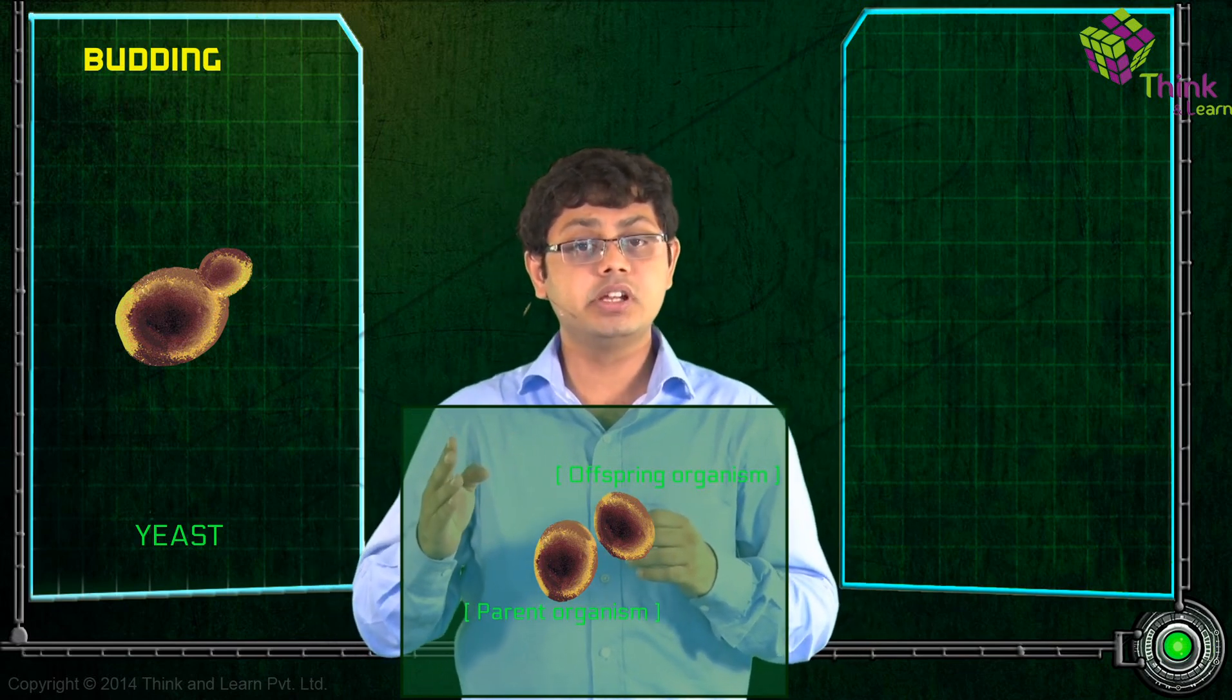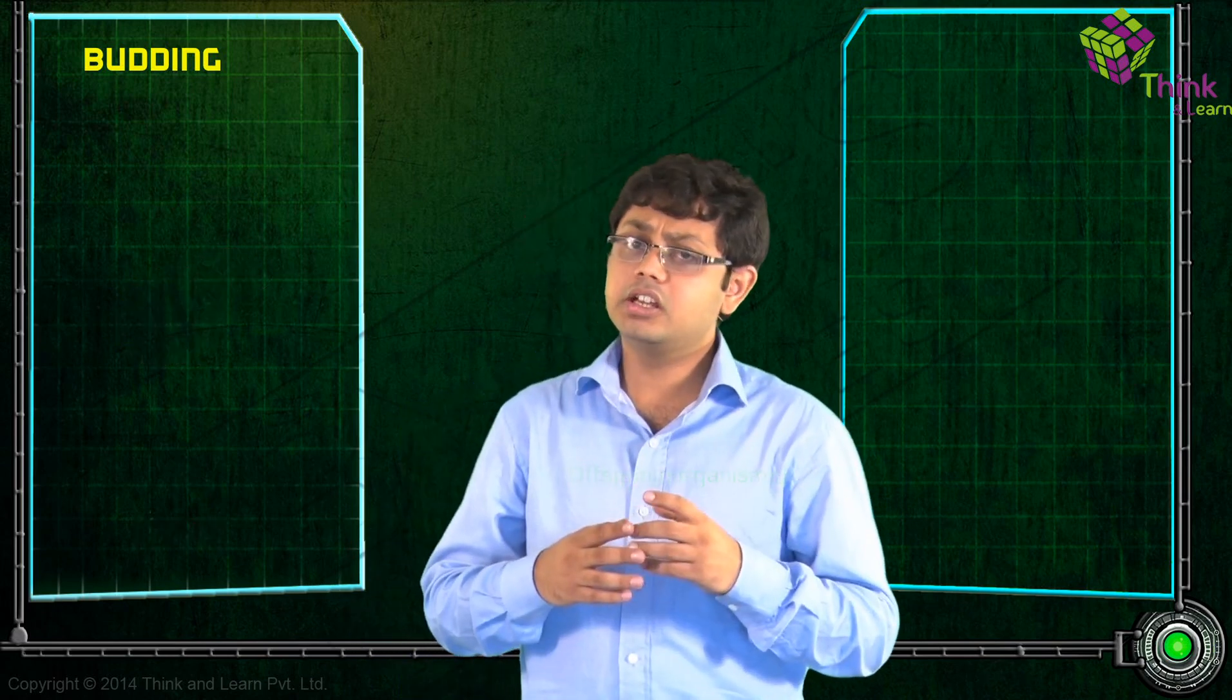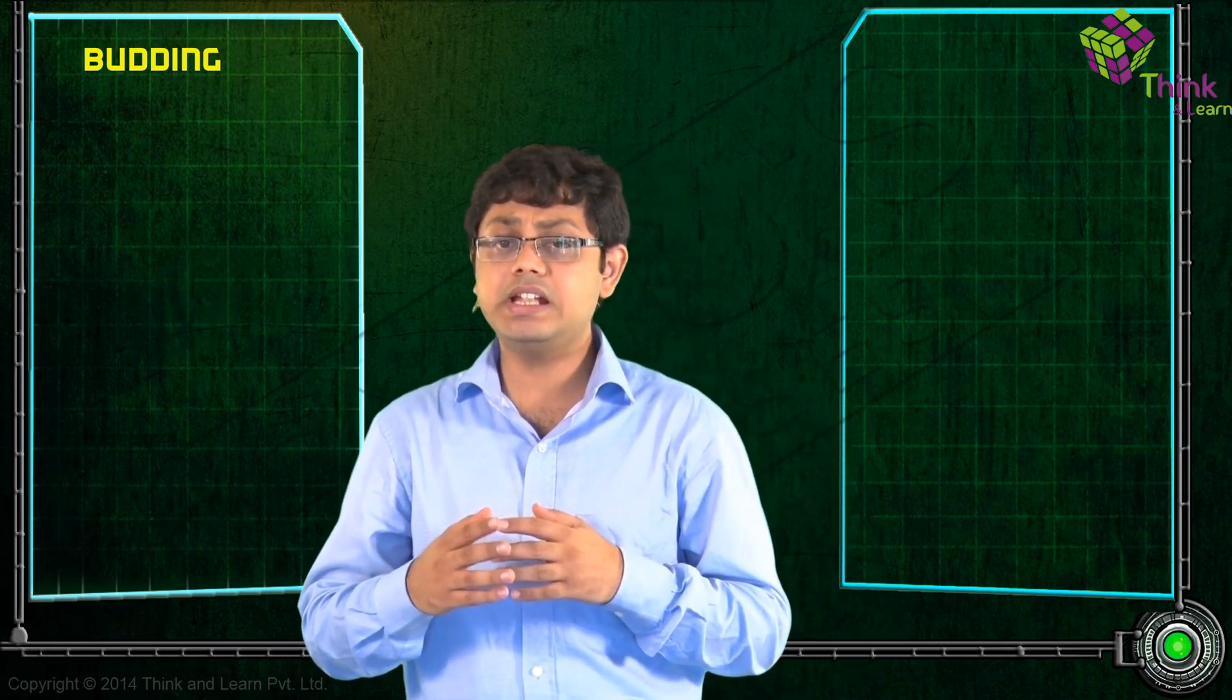The offspring organism is smaller than the parent organism. Budding is also seen at some multicellular level.